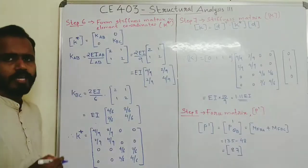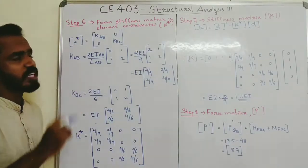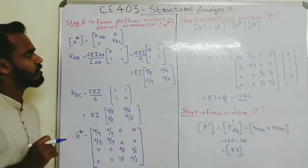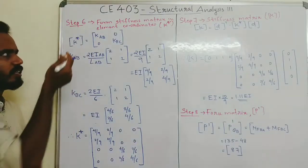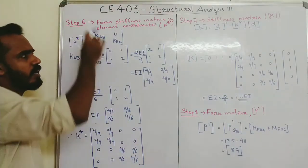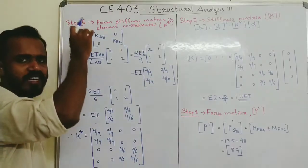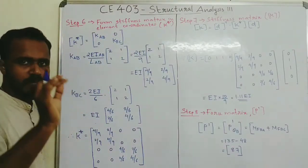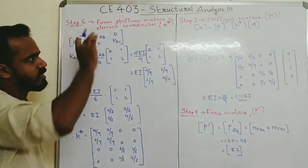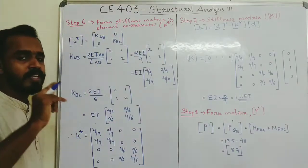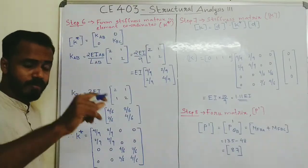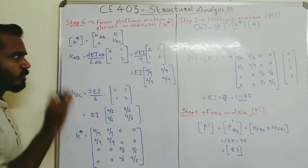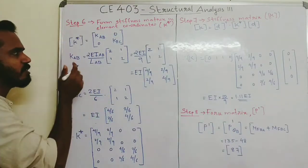Form the stiffness matrix in element coordinates — K-star. The K-star matrix is assembled from individual member stiffness matrices. Each member's individual stiffness forms a diagonal block. If the member has individual stiffness, it is diagonal; similarly for individual flexibility.